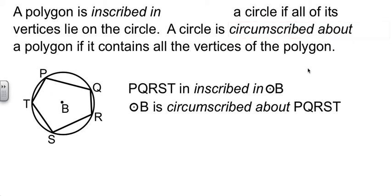Now a polygon is inscribed in the circle that way. The circle is circumscribed about the polygon if the circle touches all of the corners. Circum means around. Magellan circumnavigated the globe. He went around the world. So we're talking about going around the shape. So circle B in this case is circumscribed about polygon PQRST.